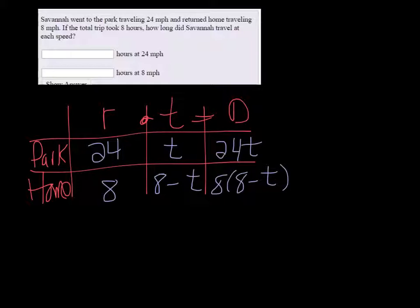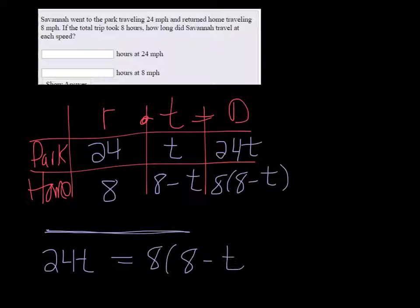Now the thing is, if you go to the park and then go home, it's the same distance. So we're going to take the two distances and set them equal to each other because they are equal. And that's what we're going to solve.